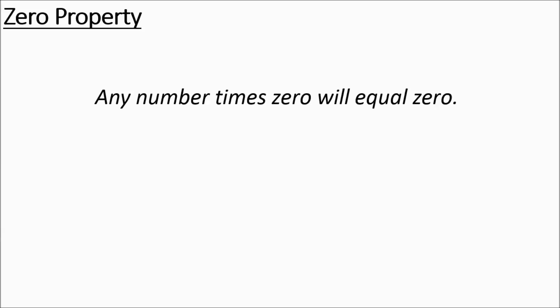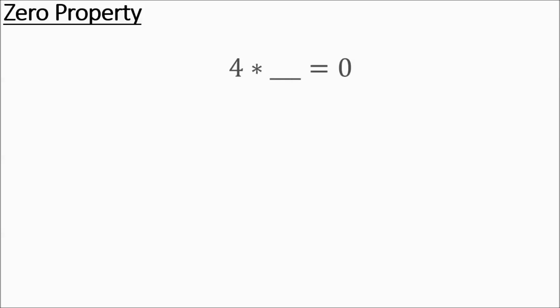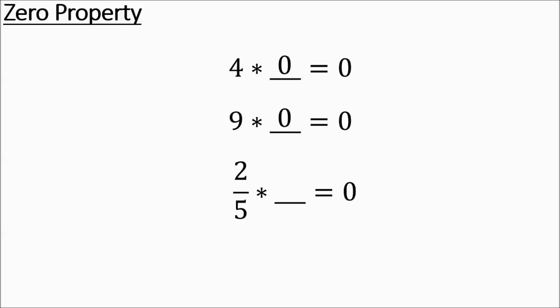Now we're going to talk about the zero property. Any number times 0 will equal 0. Here are some examples: 4 times something equals 0 — a 0 goes in there. 9 times something equals 0 — you can put a 0 in there. 2 fifths times something equals 0 — it's going to be 0.